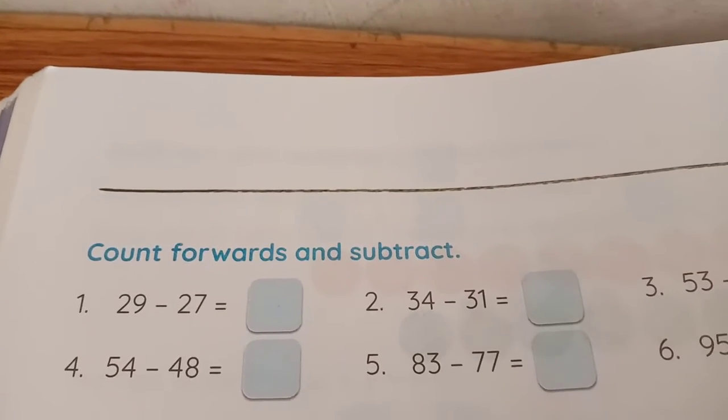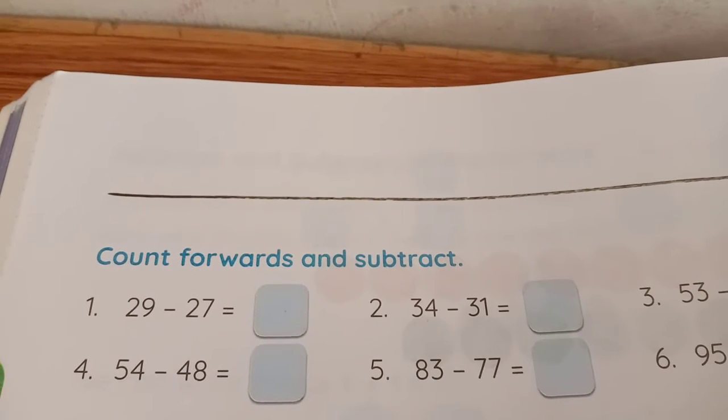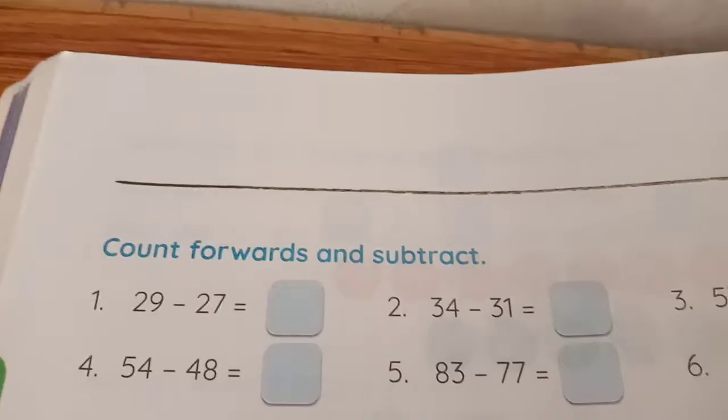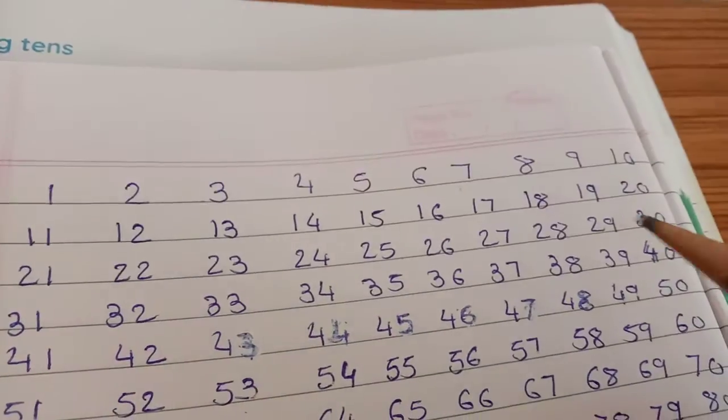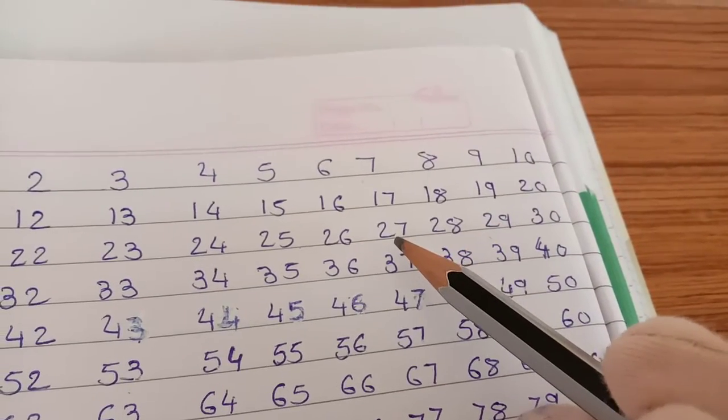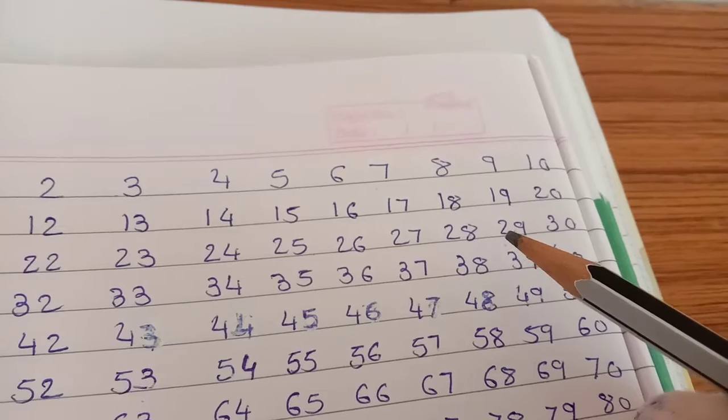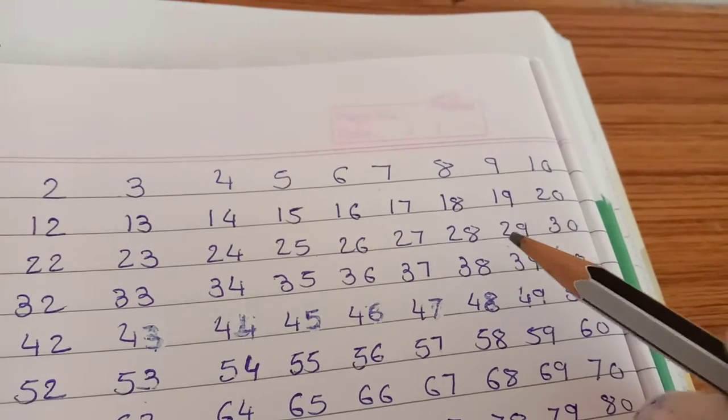Question number 1 is 29 minus 27. Our number is 29 minus 27. So children look at here, where is 29, is here. So 29 we have to go back, backwards side, go back.